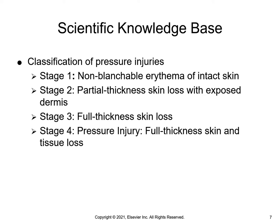A stage four pressure injury is full thickness skin and tissue loss with exposed or directly palpable fascia, muscle, tendon, ligament, cartilage, or bone in the ulcer. Slough and/or eschar may be visible. Rolled wound edges, undermining, and/or tunneling may occur. The depth varies by anatomical location.